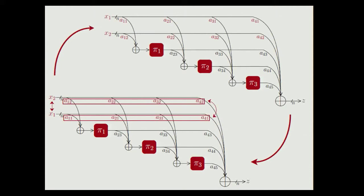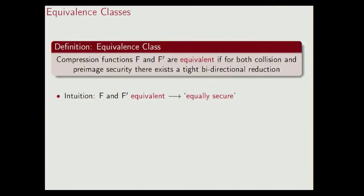This brings me to the definition of equivalence classes for the compression functions. We say that two functions F and F prime are equivalent if for both collision and pre-image security, there is a tight bi-directional security reduction. What this intuitively means is that if F and F prime are equivalent, those are equally secure, and it suffices to prove one of them secure to get security of the other one. This definition turns out to be a very powerful trick to reduce the amount of work to be done.